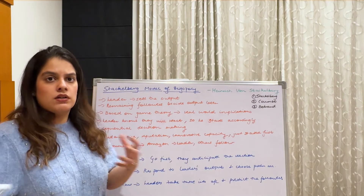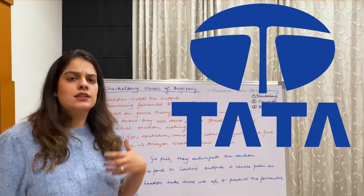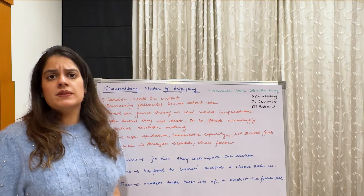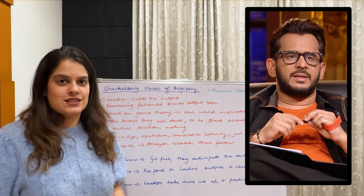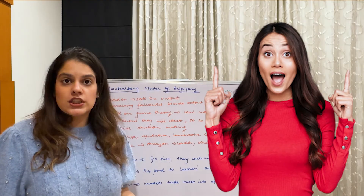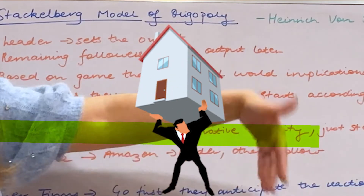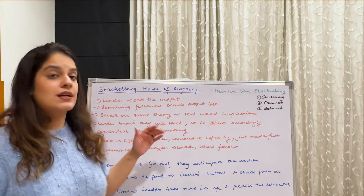Why does the leader come first? It can be because of many reasons: he has a huge size in terms of inputs and can start with that. Maybe he has a very good reputation — like Tata can go into any market and just start off, and because of reputation, people will follow them. Or maybe innovative capacity — they've made something very unique which someone else hasn't started yet. Or they simply started first.